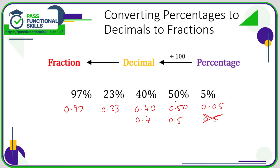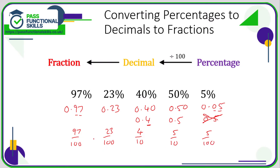To go from a decimal to a fraction, it depends on how many decimal places you have. Two decimal places means hundredths: so 0.97 is 97 hundredths, 0.23 is 23 hundredths. One decimal place means tenths: 0.4 is four tenths, 0.5 is five tenths. 0.05 has two decimal places, so it's five hundredths. Then simplify where possible: four tenths simplifies to two fifths, five tenths to one half, and five hundredths to one twentieth.